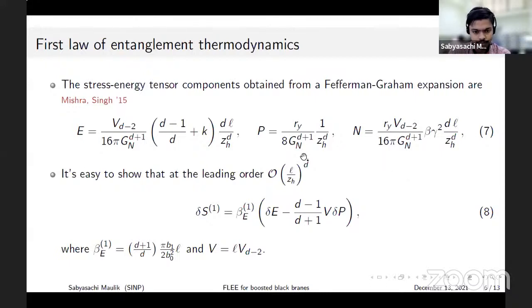Using these expressions it is very easy to show that at the leading order the entanglement entropy trivially satisfies the first law-like relationship. Here delta denotes generic variation with respect to the two parameters of our theory which are the black hole horizon parameter and the boost.